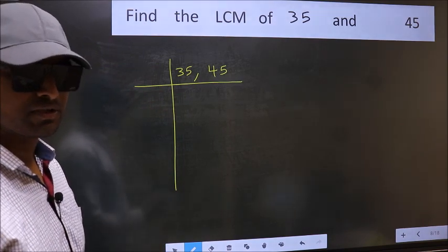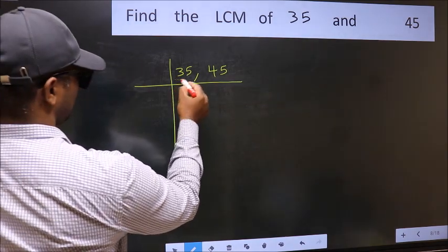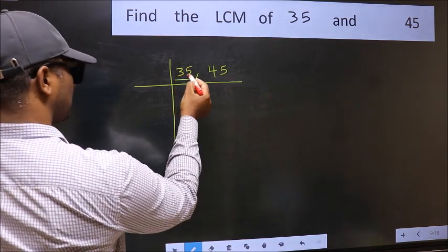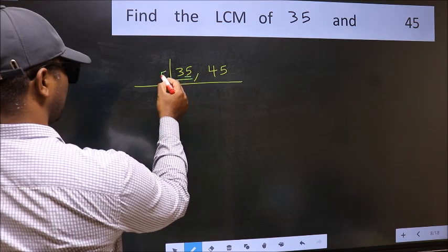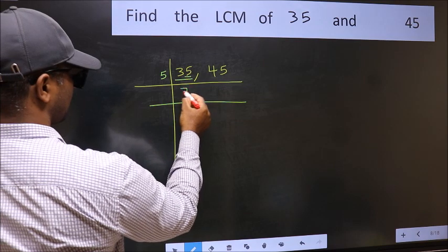Now you should focus on the first number, which is 35 here. In this number, last digit is 5, so take 5. When do we get 35 in the 5 table? 5 times 7 is 35.